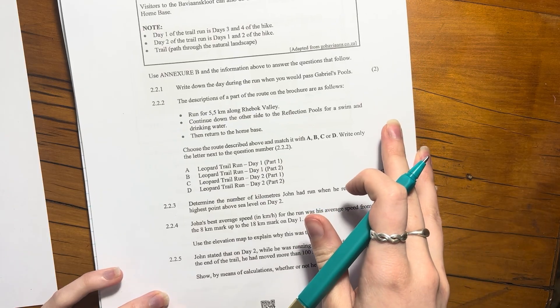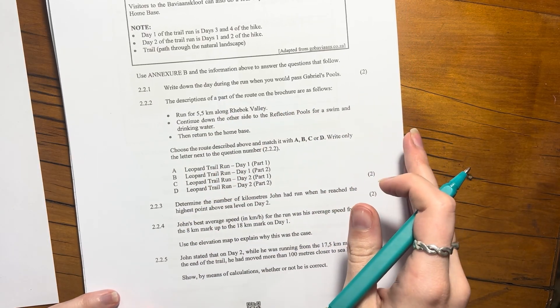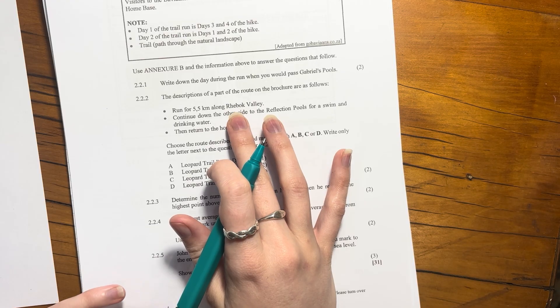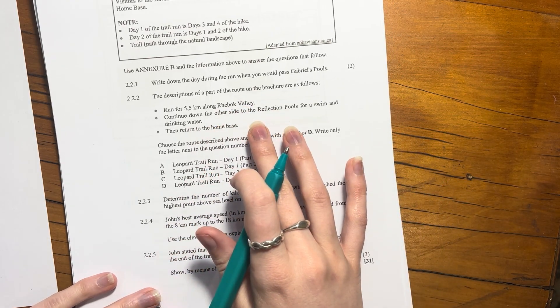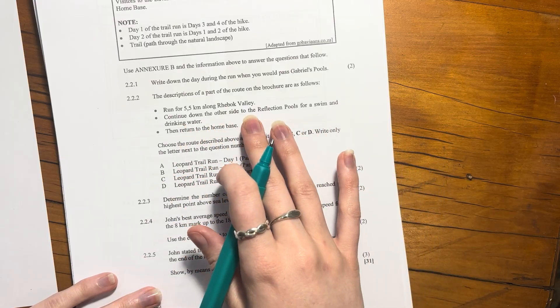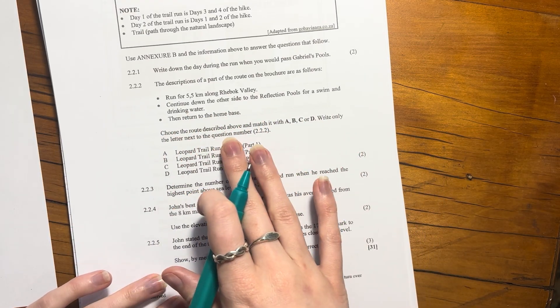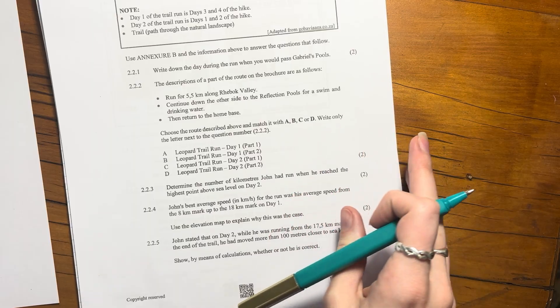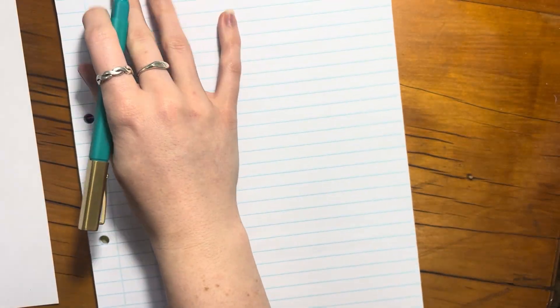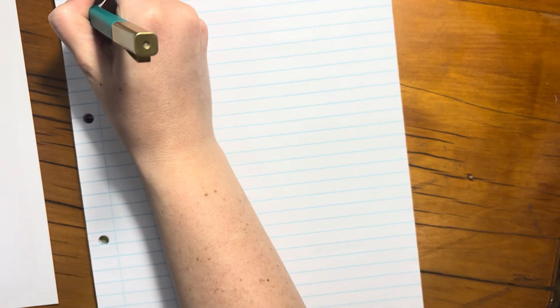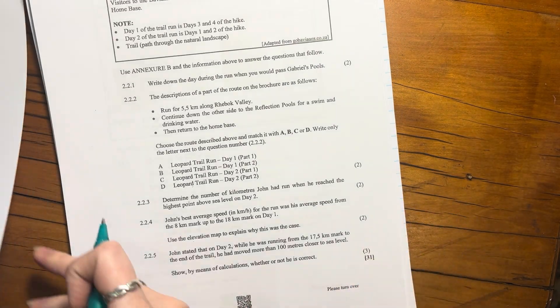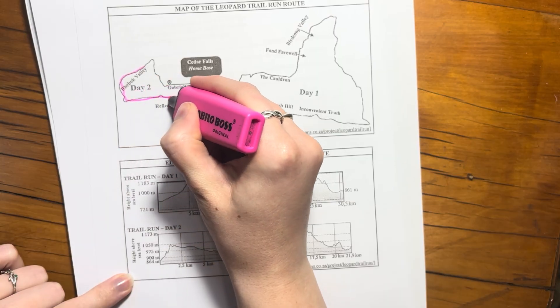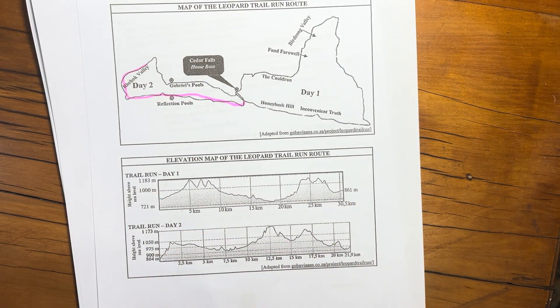2.2.2: The description of a part of the route on the brochure is as follows. You run for 5.5 kilometers above Ribbok Valley, continue down the other side to the Reflection Pools for a swim and drinking water, then return to the home base. Choose the route described above and match it with A, B, C, or D. Write only the letter next to the question number. It's basically here, this is the part that it's talking about. It's going back to home base.